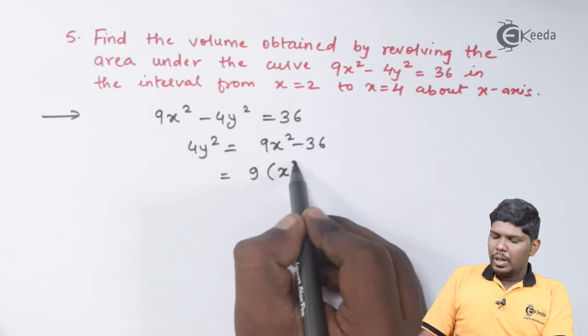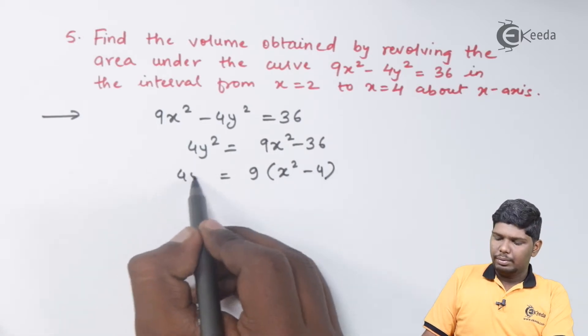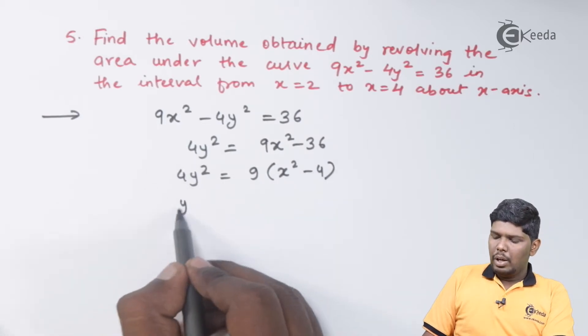Taking 9 common we have x² - 4, dividing by 4 the value of y² will be 9/4(x² - 4).